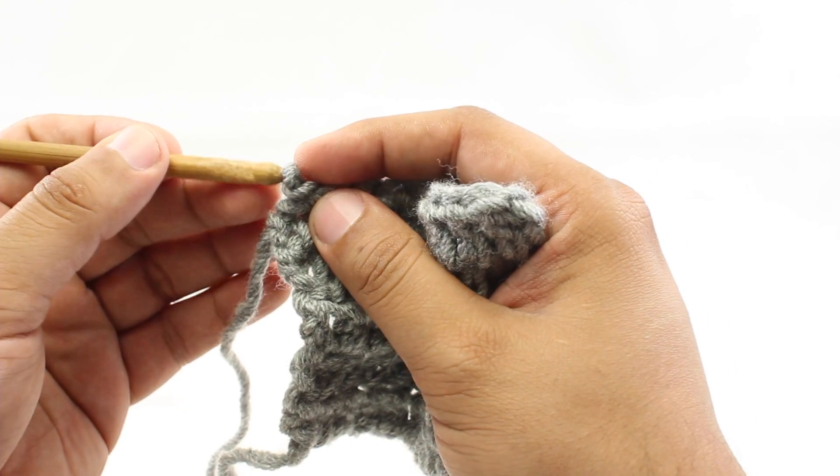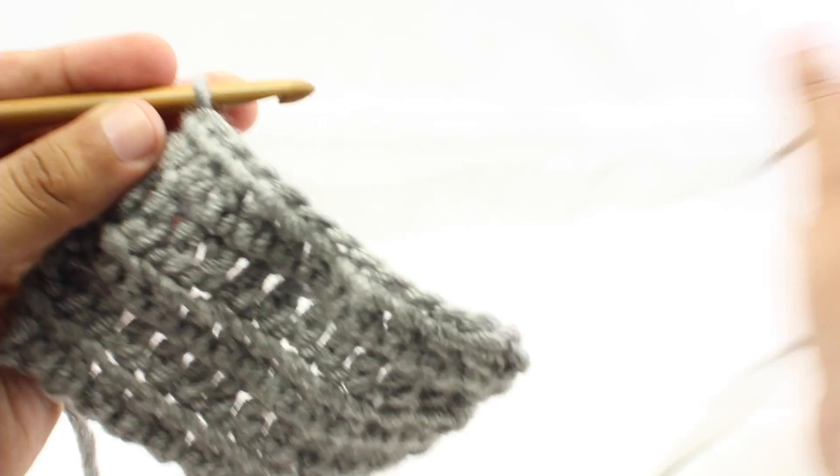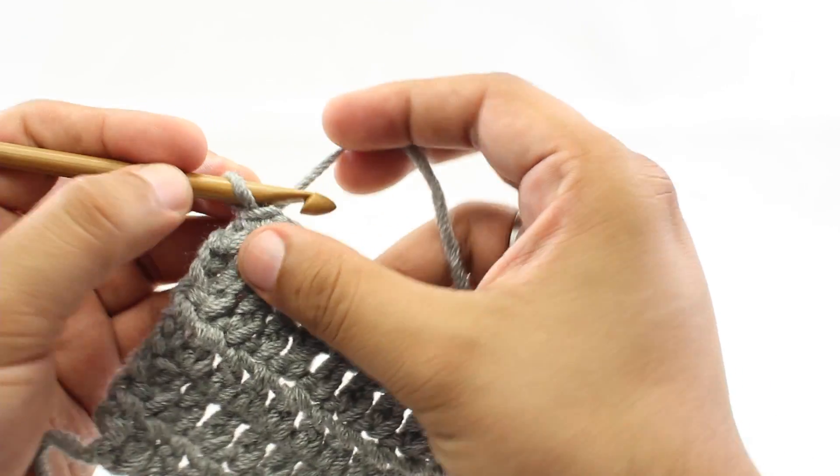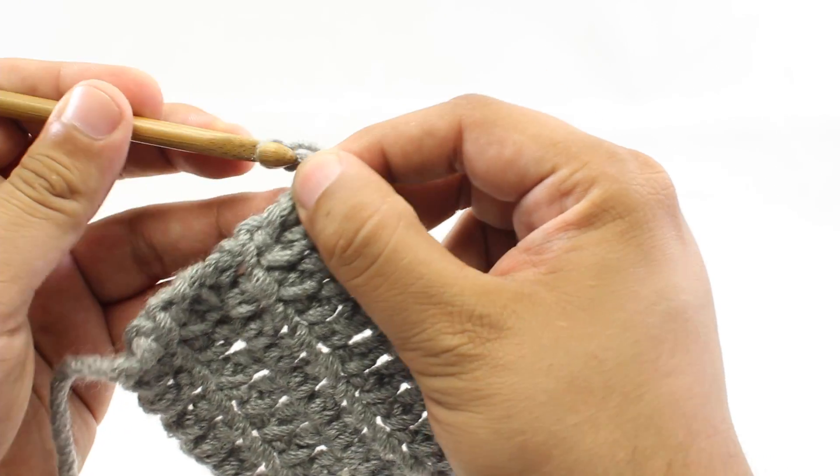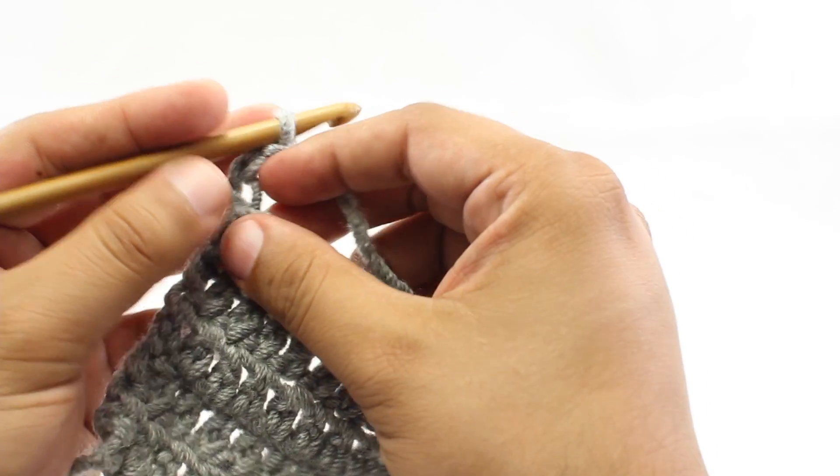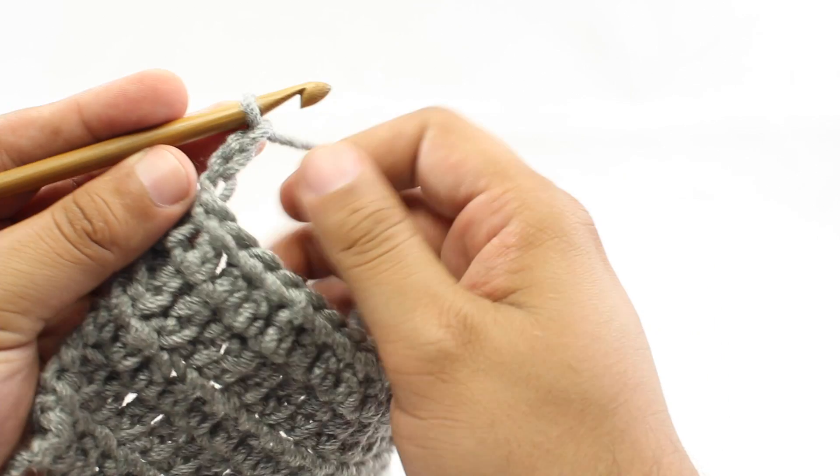I'm going to take our crochet hook and just put it in this loop here. Now one note real quick before we do the actual stitch: we are going to do a chain 3 instead of a chain 2 to begin this row. Because of the additional height, you're going to want to have that extra stitch.